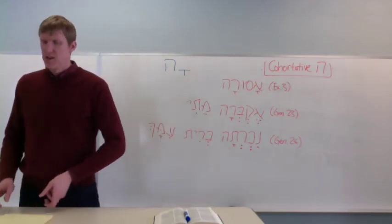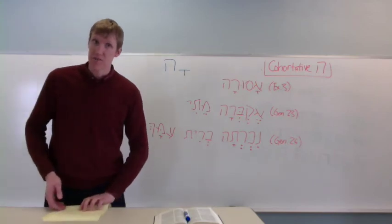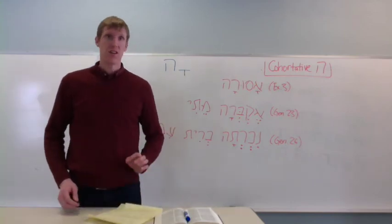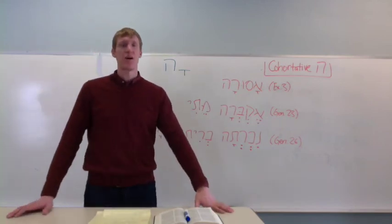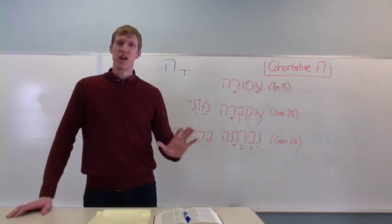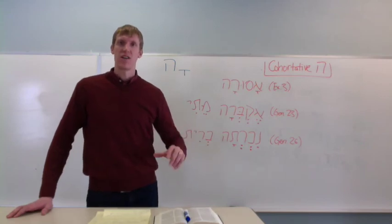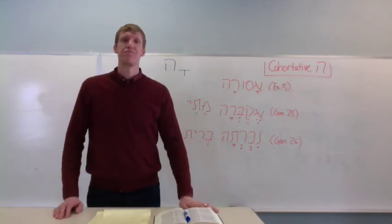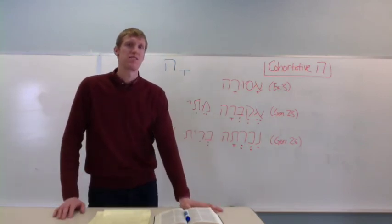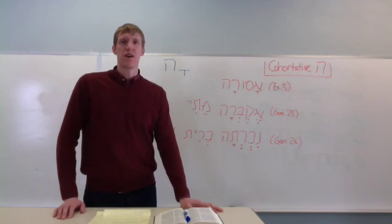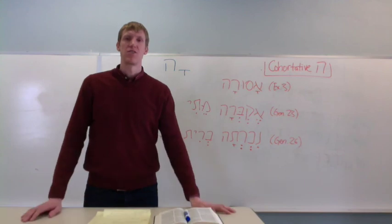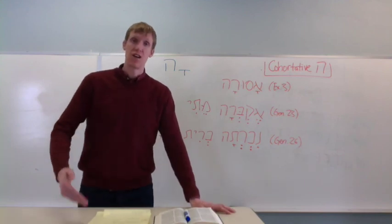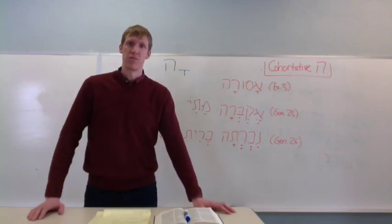So, the cohortative happens only on first-person imperfect forms. And it's just simply the addition of a comet's hay on the end. Generally gives the idea of let us or let me do something. But in certain circumstances also can have this sort of more forceful articulation of certainly. I will or we will certainly do something.